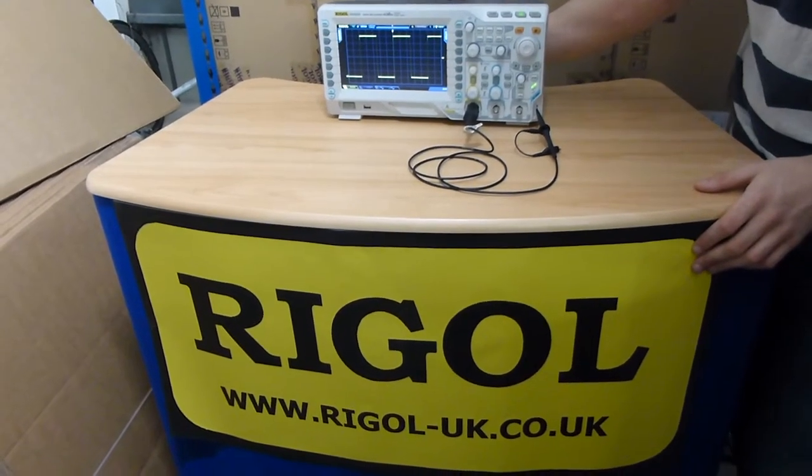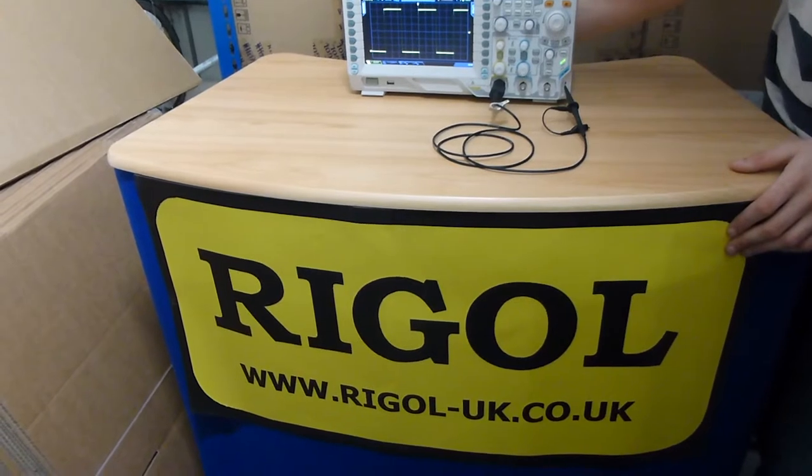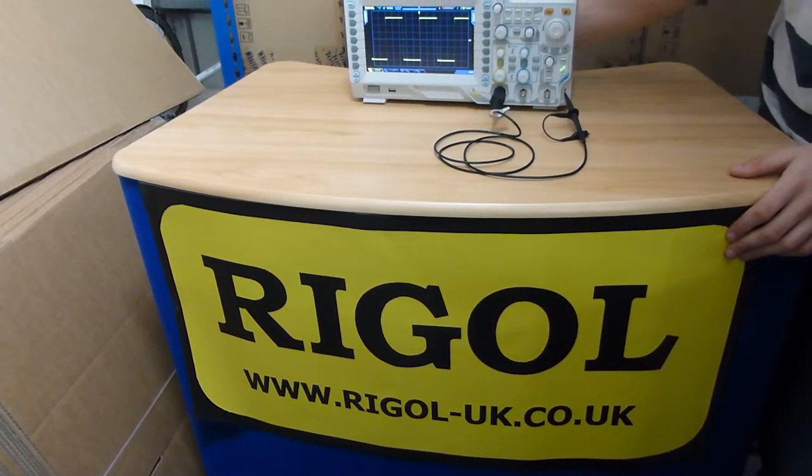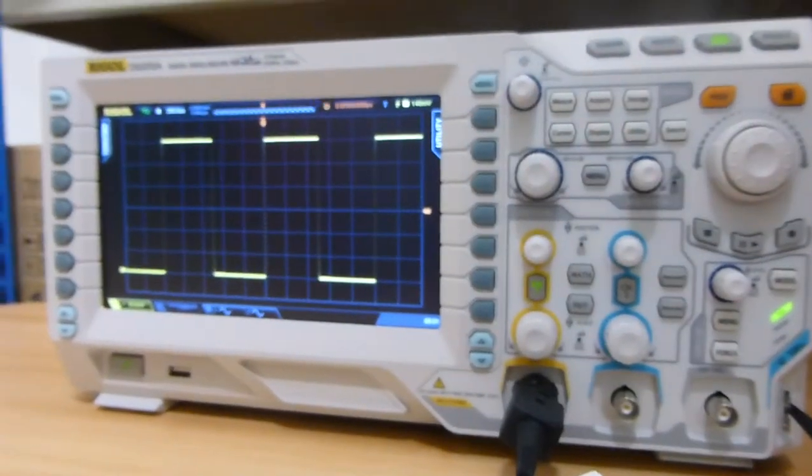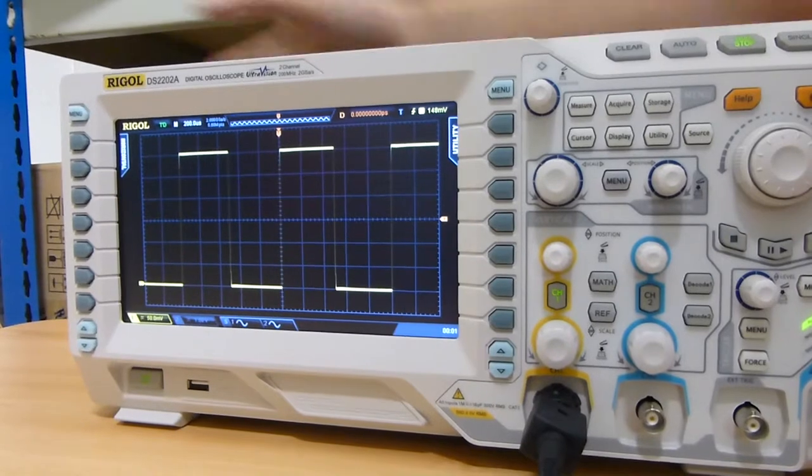This is a quick video on the menu functions on the Rigol DS2202A oscilloscope. The first menu we have is the horizontal menu.